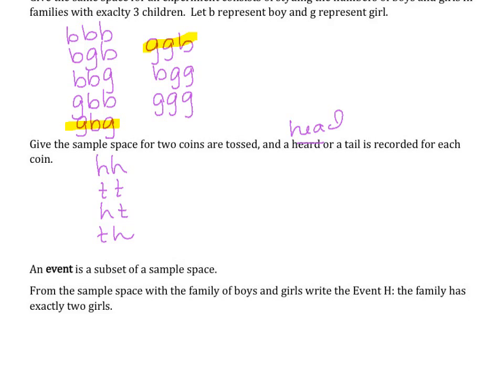Girl, girl, boy, and boy, girl, girl. So we would write that as event H has three options: girl, boy, girl; girl, girl, boy; or boy, girl, girl.